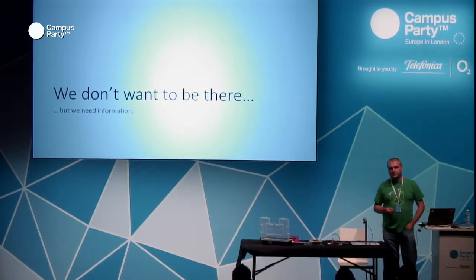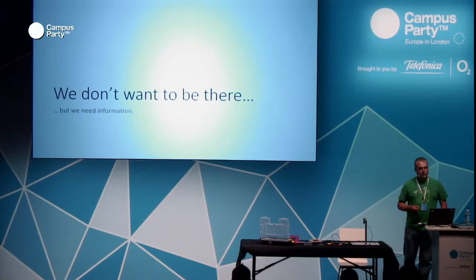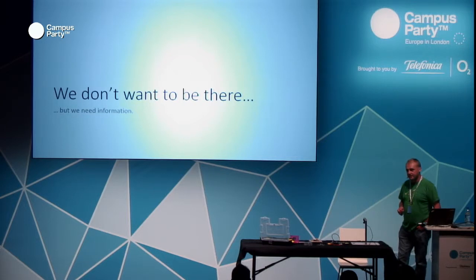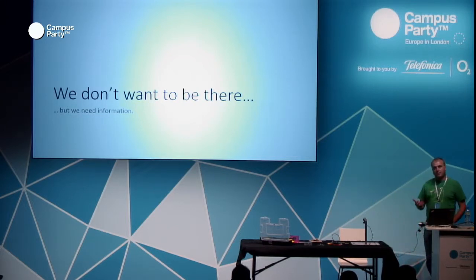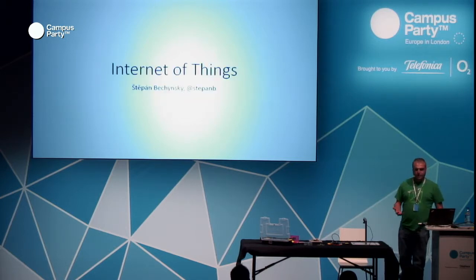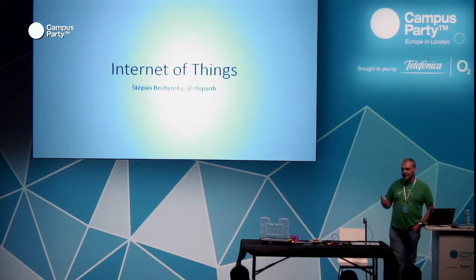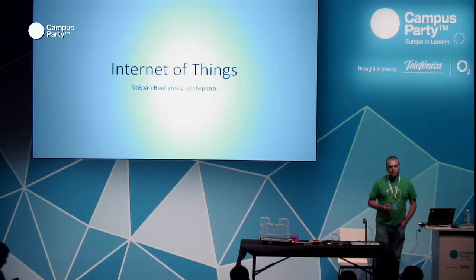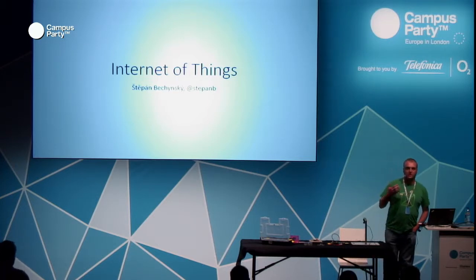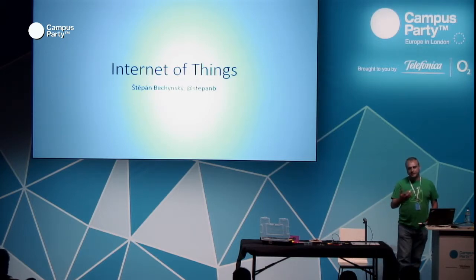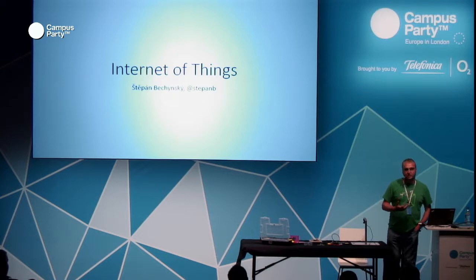These are quite interesting places, but definitely you don't want to be there. You don't want to be in the middle of a forest fire. You don't want to be close to Fukushima. You don't want to be near the Prague floods. But you need information about what's happening there. And this is a job for Internet of Things.